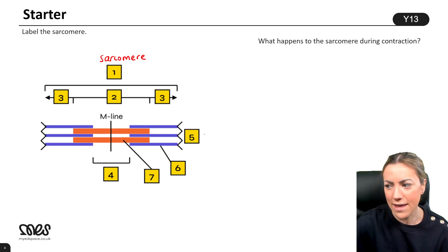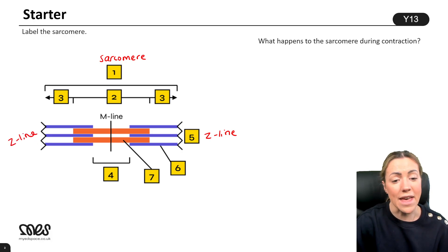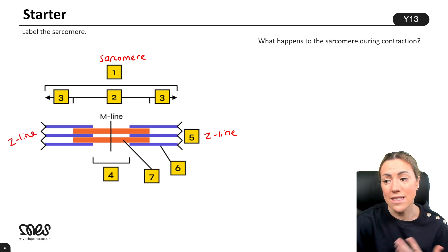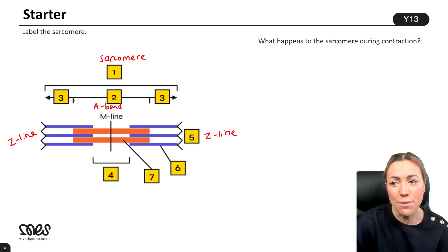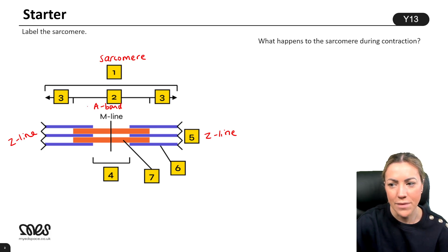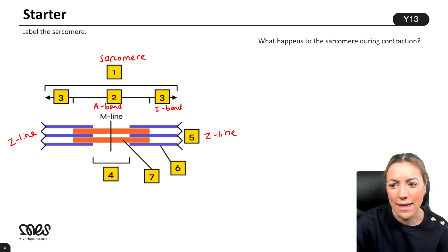Number five is a Z-line, and you've got another Z-line over here — they mark the ends of the sarcomeres. Number two is the A-band, because it's the length of the myosin filaments. Number three is the I-bands.